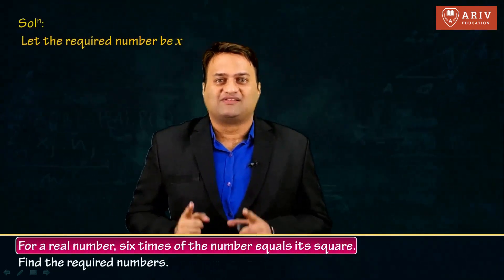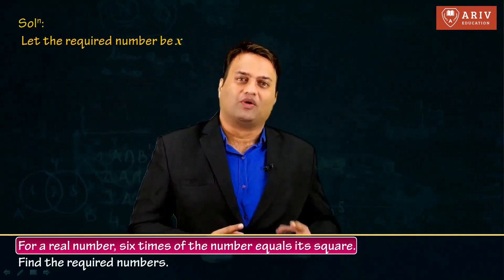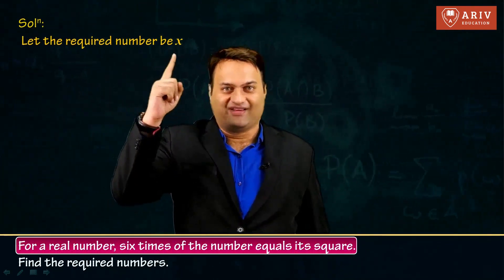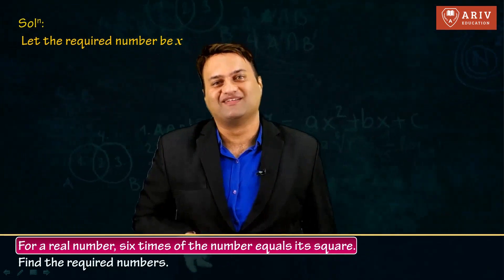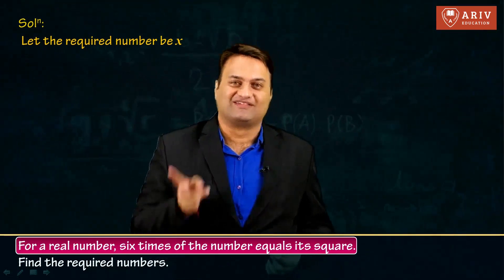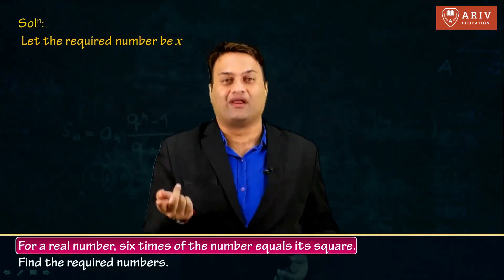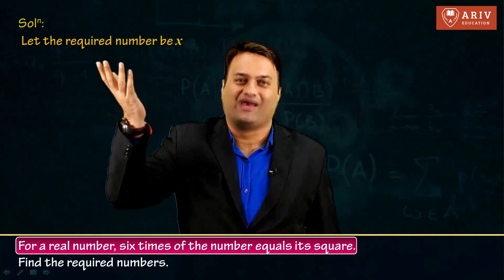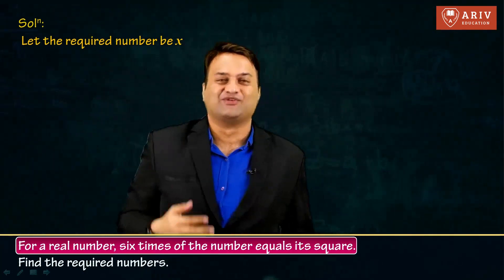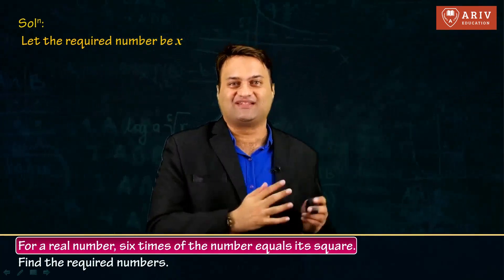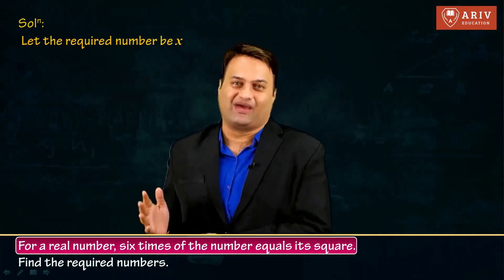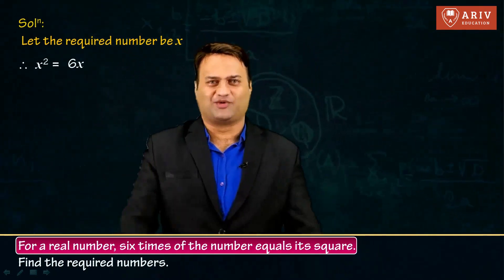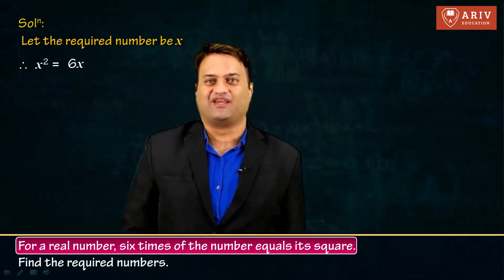Now the question says six times of the number equals its square. The number is x, so six times the number — six x — equals x square. So the equation is simply six x is equal to x square, or x square is equal to six x — one and the same.